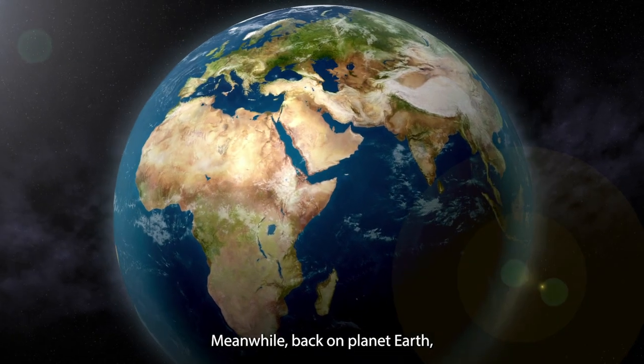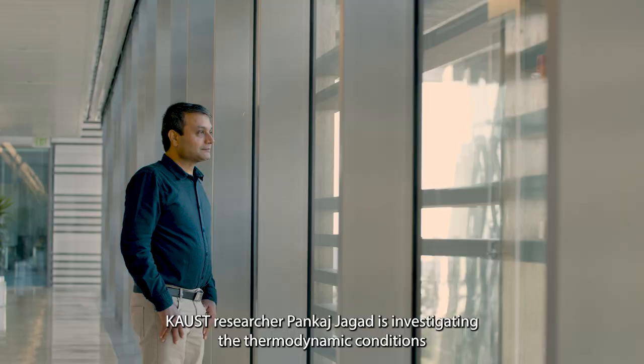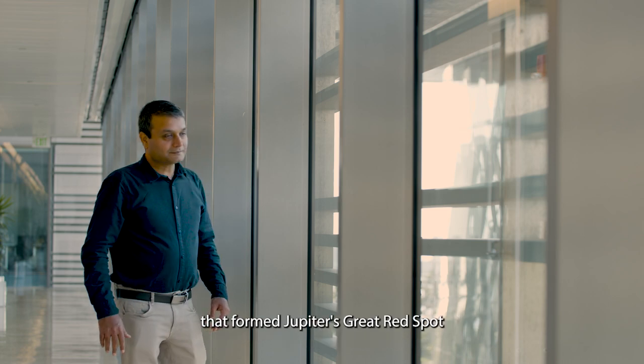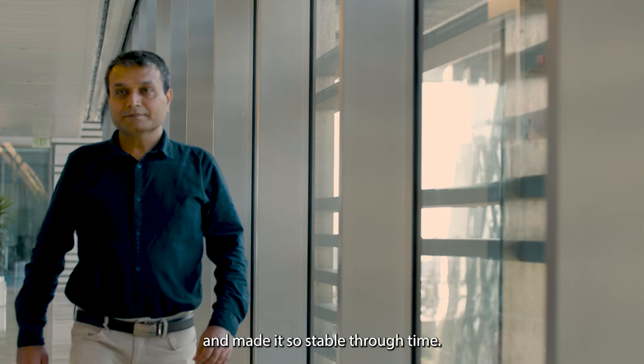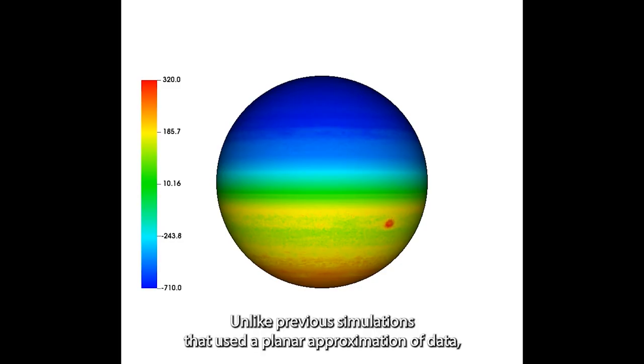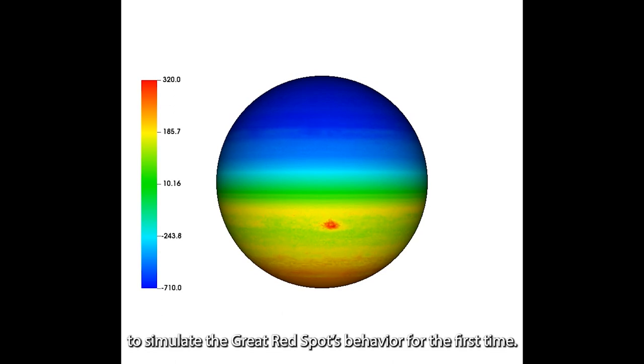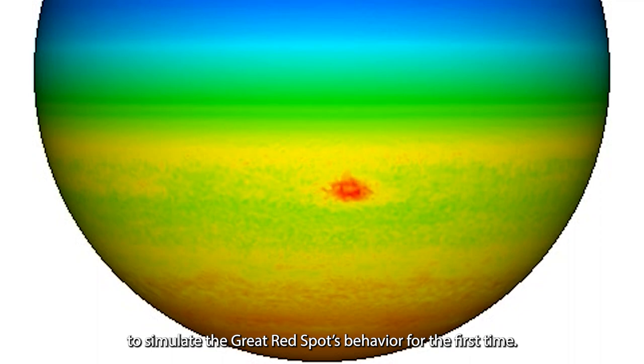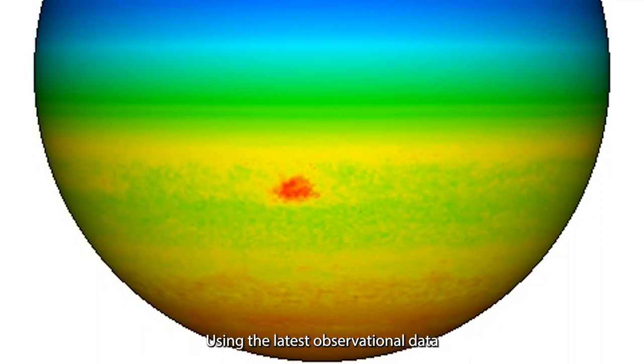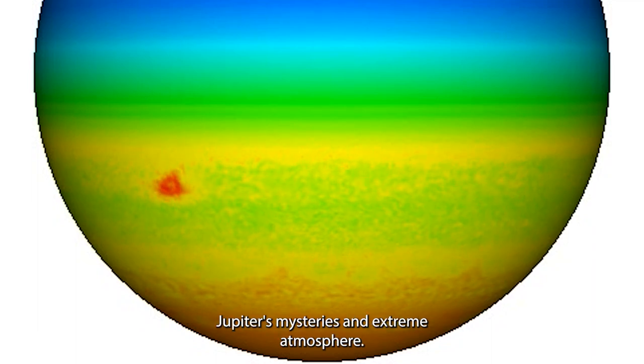Meanwhile, back on planet Earth, KAUS researcher Pankaj Jagid is investigating the thermodynamic conditions that formed Jupiter's Great Red Spot and made it so stable through time. Unlike previous simulations that used a planar approximation of data, Jagid has used a spherical model to simulate the Great Red Spot behavior for the first time. Using the latest observational data, Jagid's simulations are helping scientists unravel Jupiter's mysteries and extreme atmosphere.